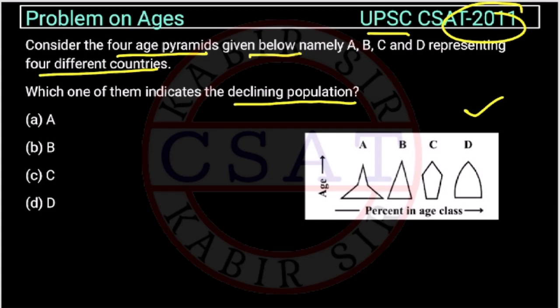If you know, we read this kind of pyramid in GS paper. This is related to geography or you can say economy. Mainly in the geography, it will come. So, age pyramid we are talking about.